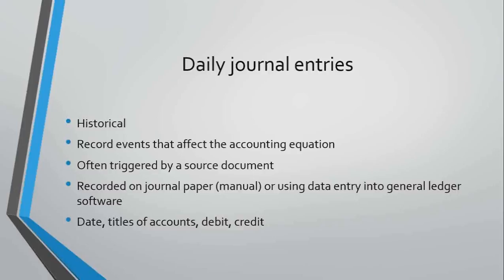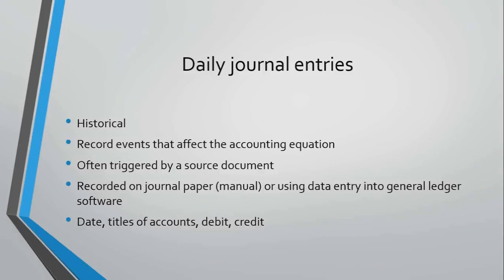Daily journal entries are specifically recorded after something has happened — they have to have some impact on assets, liabilities, and stockholders' equity. There's often a piece of paper, a document, that triggers them. Some important events, like signing a contract, will not affect entries right away — if you haven't acted on the service and the customer hasn't given you anything for it, it's not yet in your accounting system. All journal entries will pick up debits and credits, account titles, and the transaction date.